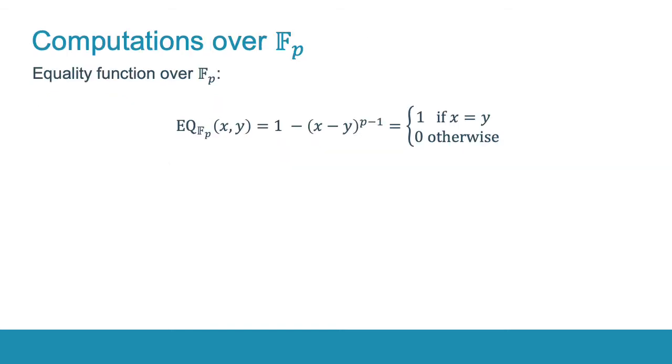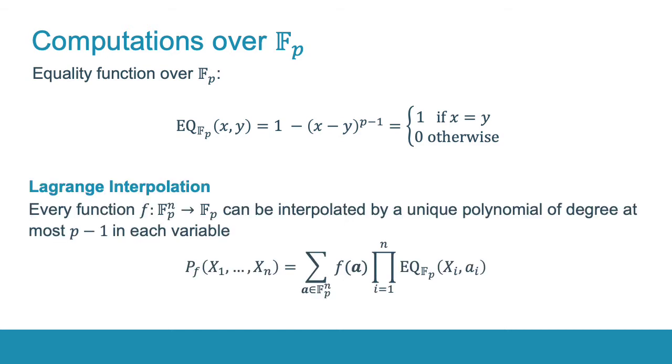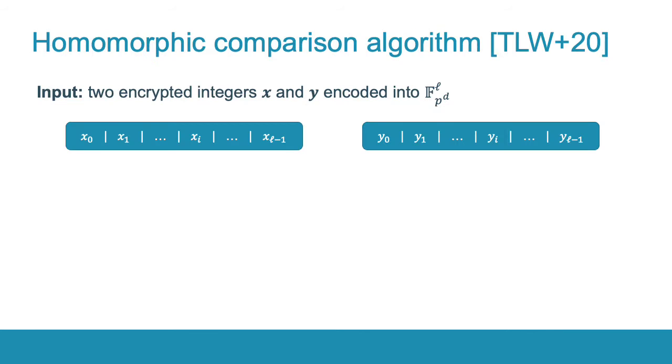To compute integer comparison we need the equality function over Fp, which is defined in the following way and can be computed in a logarithmic number of non-scalar multiplications. Using the equality function we can interpolate any function over a finite field using the Lagrange interpolation. The resulting polynomial will be unique and of degree at most p-1 in each variable. As a result we have all the ingredients to compare encrypted integers.